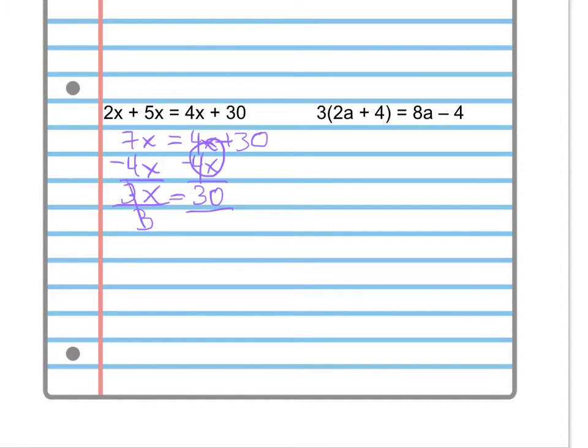3 divided by 3 makes a 1. 1 times x makes an x, which is equal to, well, we have to divide 30 by 3 as well, which is 10. So our answer is x equals 10.